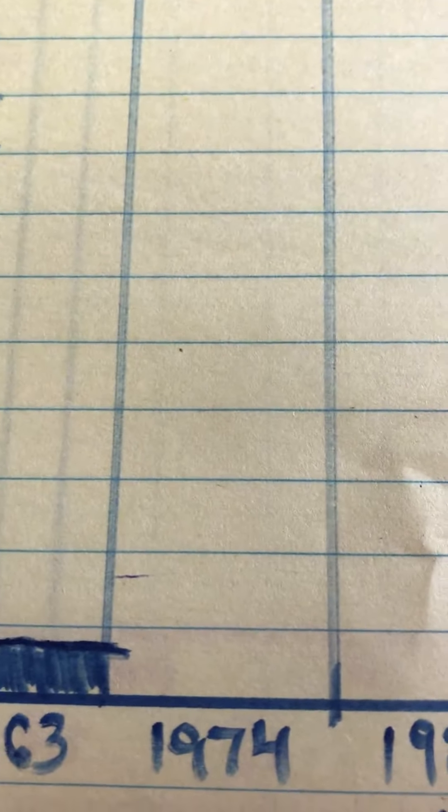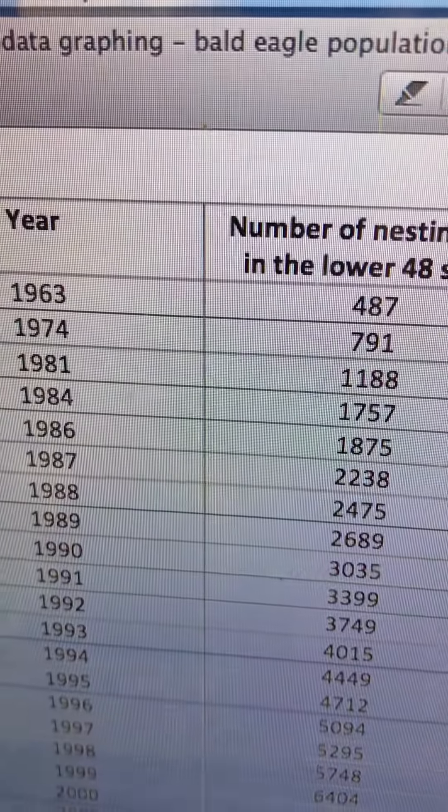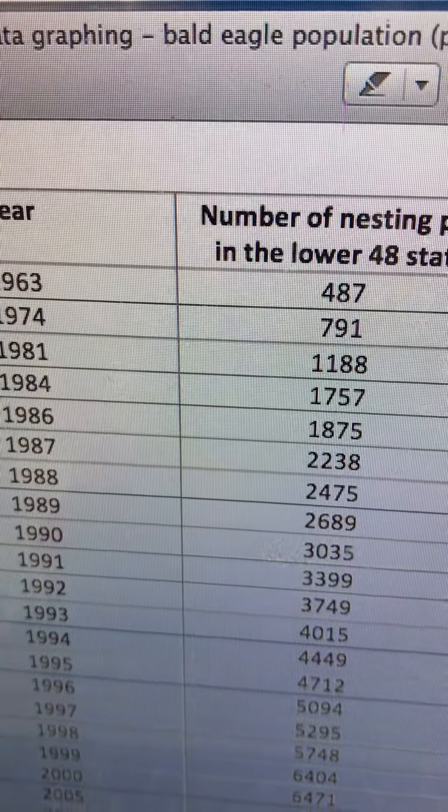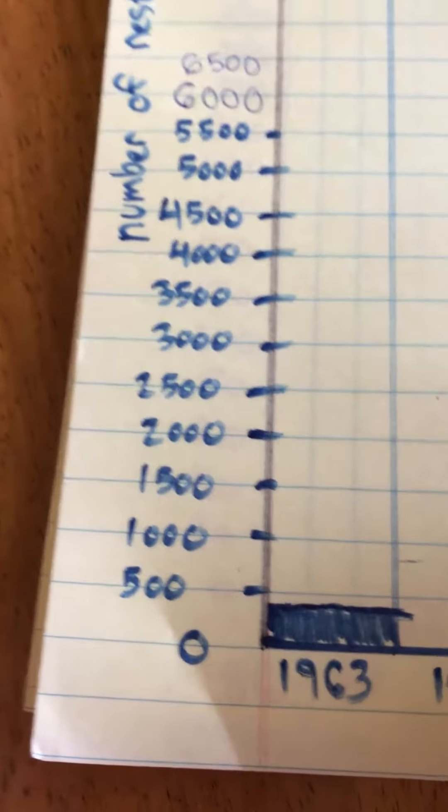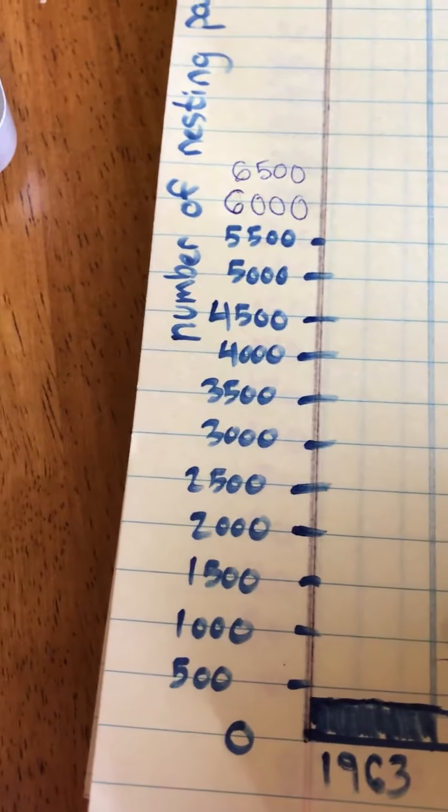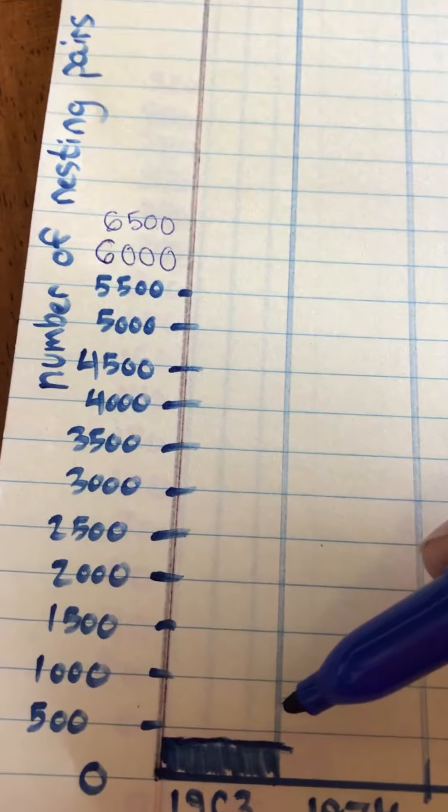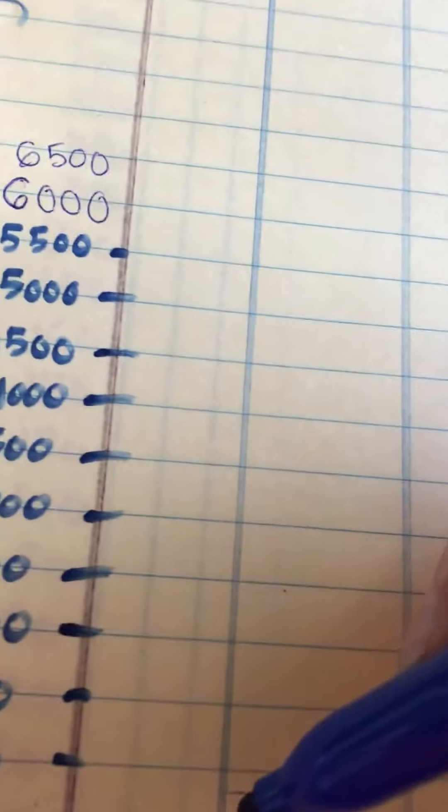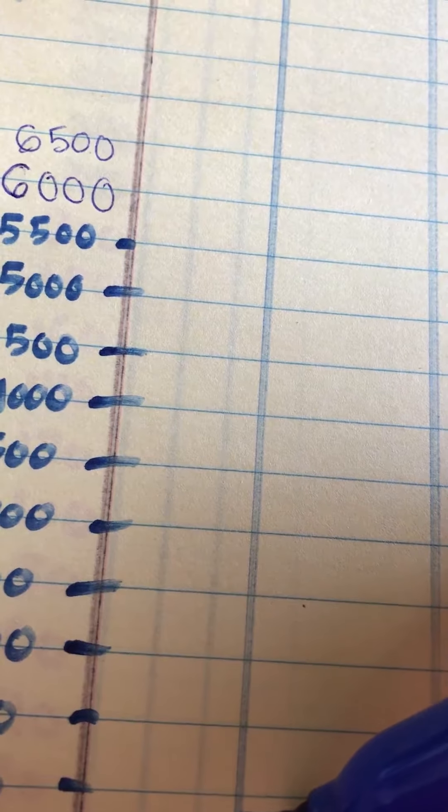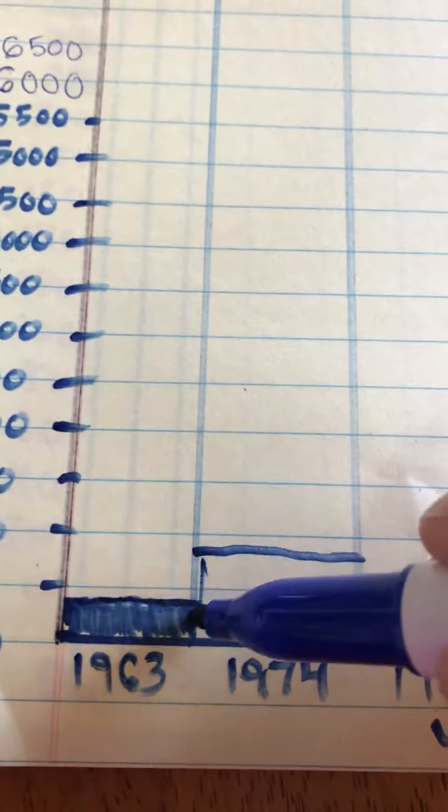Okay, the next year I chose was 1974. So again, I go back to my data. For 1974, there were 791 birds. So for that year, I'm going to come up, it's halfway between 500 and a thousand, a little closer to a thousand. So I'm going to put my line about right here for that year. Sorry, there we go.